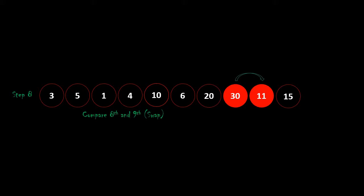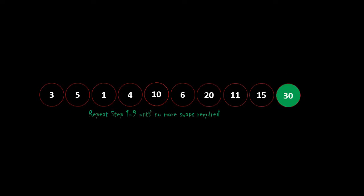Step 8: Compare the eighth and ninth element. Is 30 greater than 11? Yes. Swap that element. Step 9: Compare the ninth and tenth element. Is 30 greater than 50? No. Swapping is not required. After this first pass, 50 is the sorted element at the end of this array. Now repeat steps 1 to 9 until no more swaps are required.